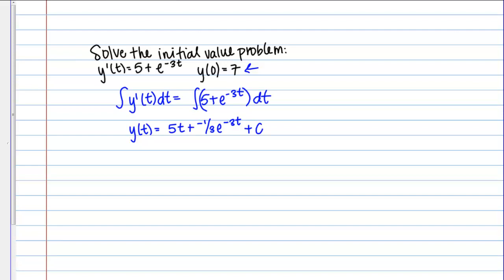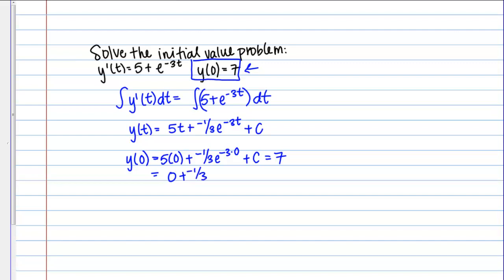What I want to find is one particular solution — the solution that goes through the point y of 0 equals 7. Basically, I'm going to use the fact that y of 0 equals 7 to solve for C. I simply plug in 0 for t and set it equal to 7, then solve for C. 5 times 0 is 0, plus negative one-third, and e to the 0 is 1, so plus C equals 7. That gives me C equals 7 plus one-third, or 22 thirds.